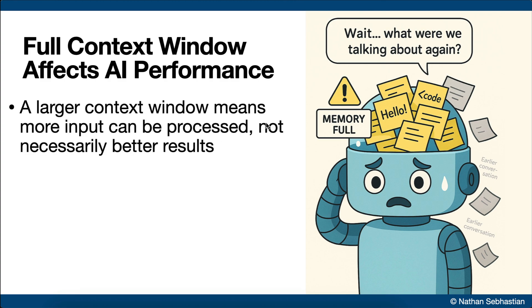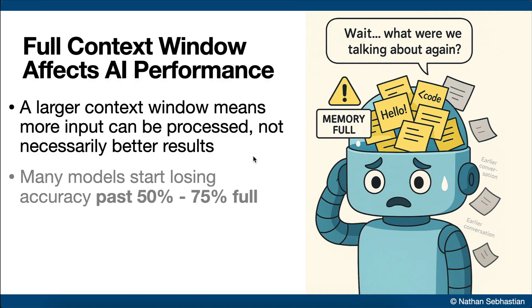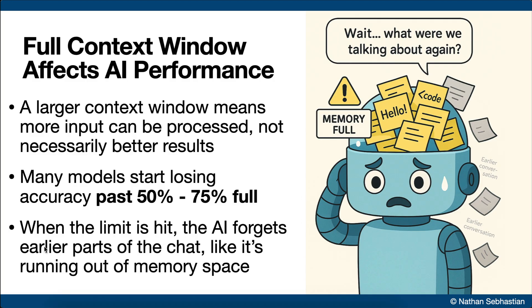Now, having a larger context window doesn't necessarily make the model better — it just means it can take in more information at once. In fact, for many models, performance can start to drop when the context window gets more than half, or about 75% full. The rule of thumb is that once a model hits its context limit, it starts forgetting things from earlier in the conversation. Which is why, in longer chats, you might notice that the AI starts to lose track of what you said before — it's likely just run out of space to remember the whole conversation.